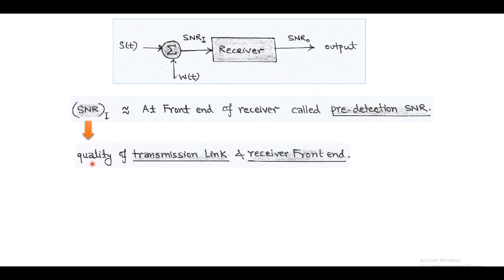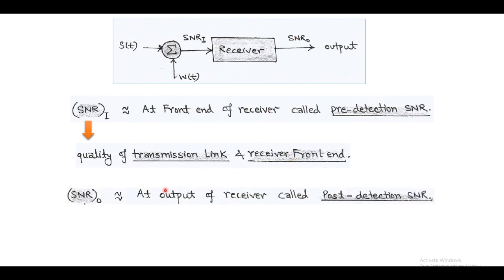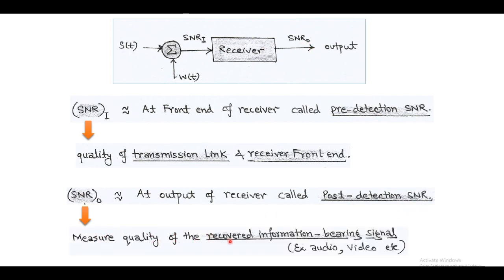The pre-detection SNR measures the quality of the transmission link and the front end of the receiver. Similarly, at the output of the receiver we find SNR_0, called the post-detection SNR. This output SNR measures the quality of the information bearing signal, which may be in the form of audio, video signal, etc.